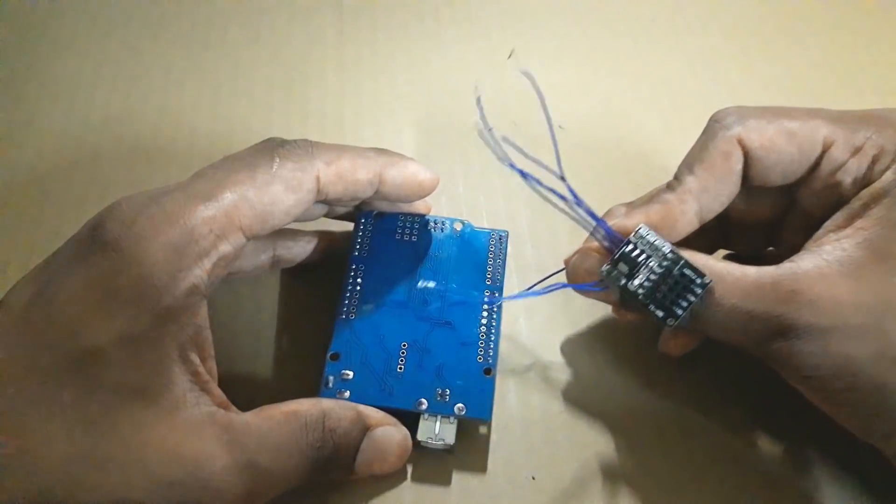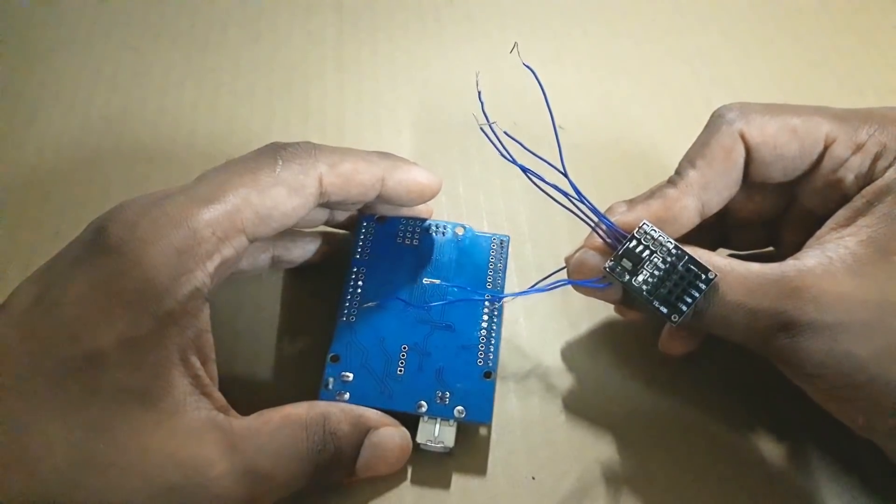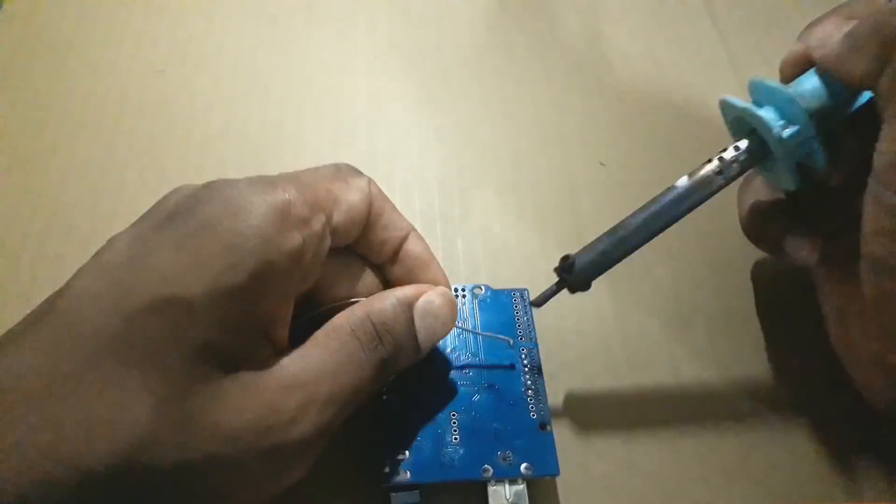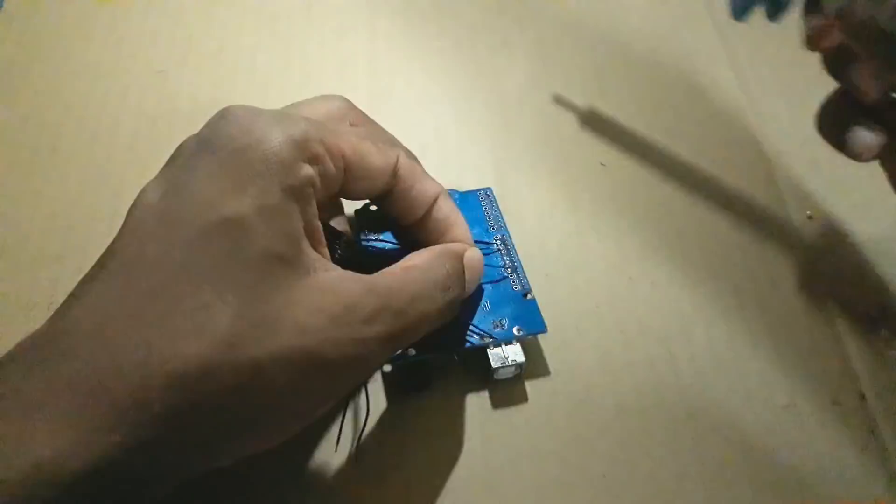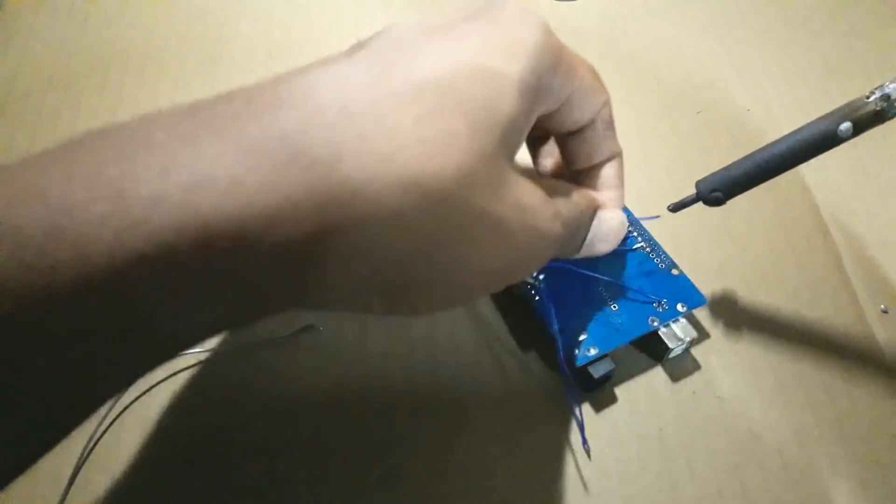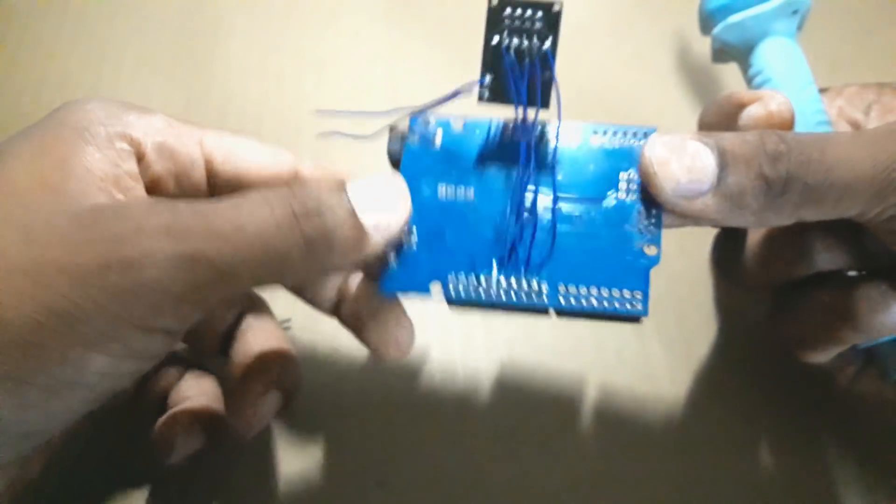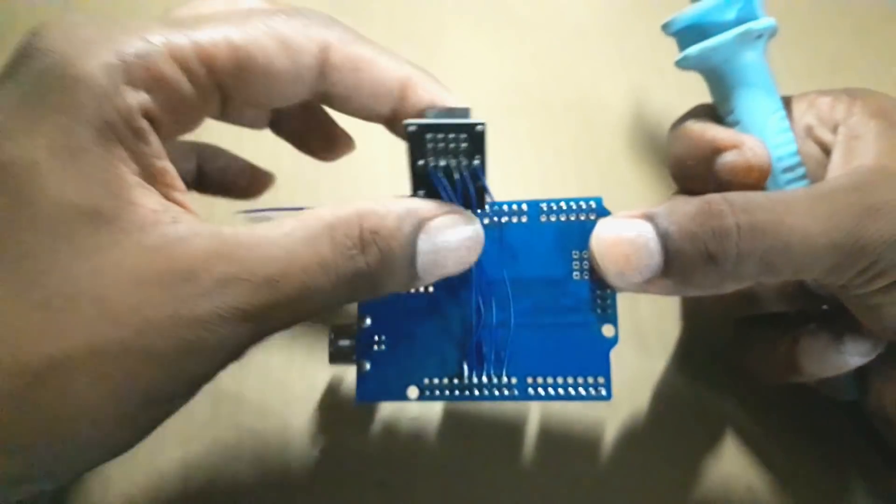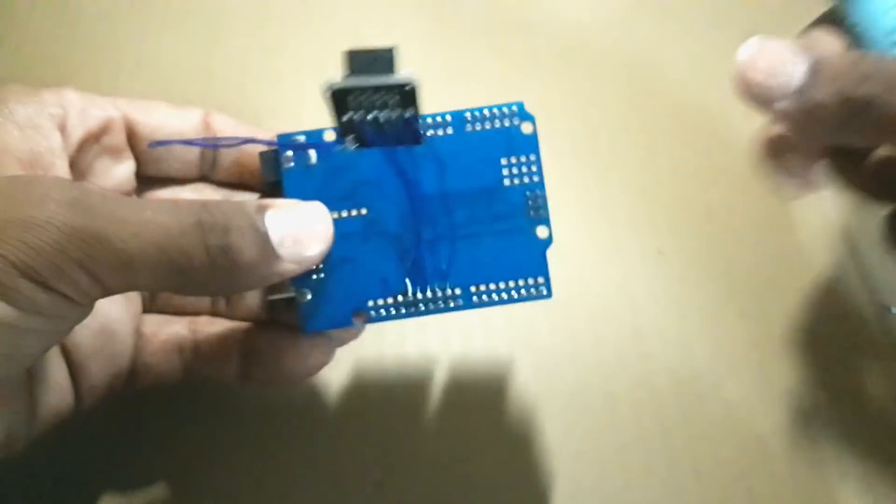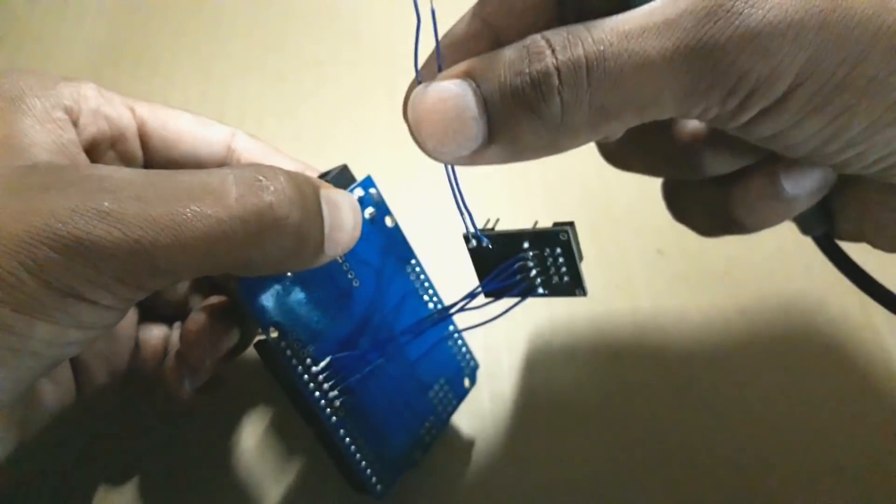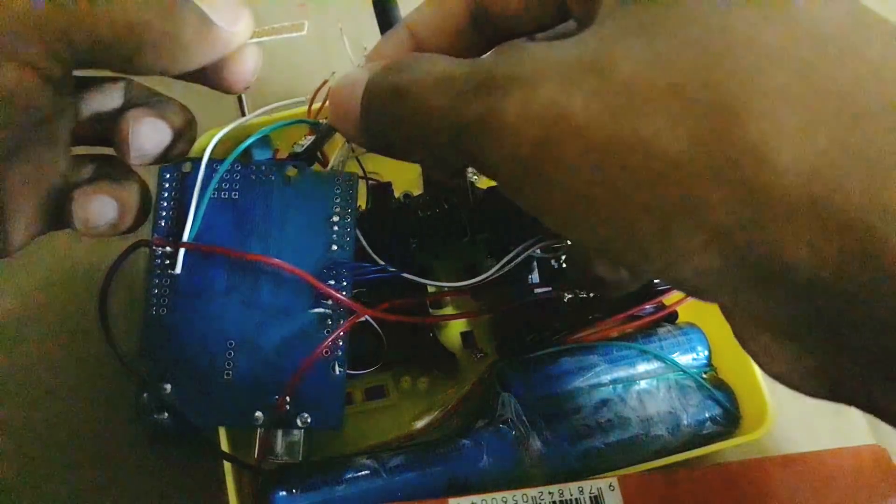First of all, I will connect the NRF adapter to the Arduino according to the circuit just shown before. So this is how it should look like. I have not yet connected the VCC and the ground pin because I will make a common for the VCC and the ground.